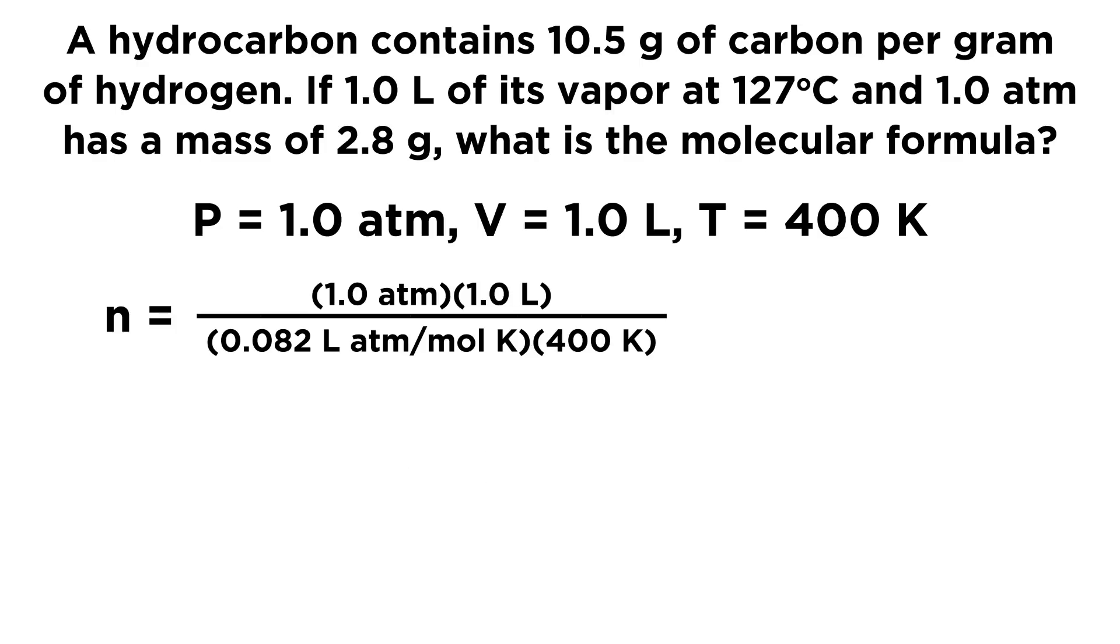For pressure, let's put in one atmosphere. For volume, one liter. For the gas constant R, we put in 0.082 liters atmospheres per mole Kelvin. And then the temperature in Kelvin, 400 K. We see that everything is going to cancel out nicely except for moles, and we will get an answer in moles, which is convenient because we are solving for moles. We do the arithmetic and get 0.0304 moles. That is the number of moles of the unknown hydrocarbon that we have.